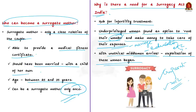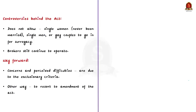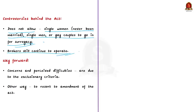So they came up with the Surrogacy Act. Now, what are the controversies? The law does not allow a single woman who has never been married to commission surrogacy. The act also does not allow a single man or a gay couple to go in for surrogacy. Secondly, even after stringent measures, brokers still continue to operate, defeating the very purpose of the act.